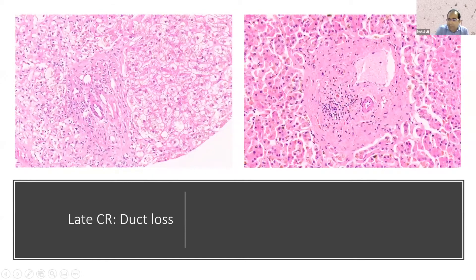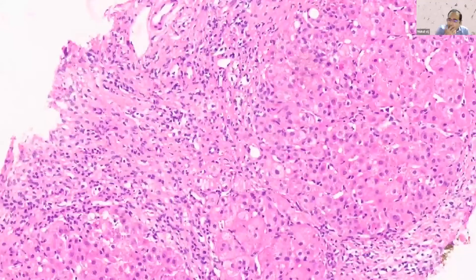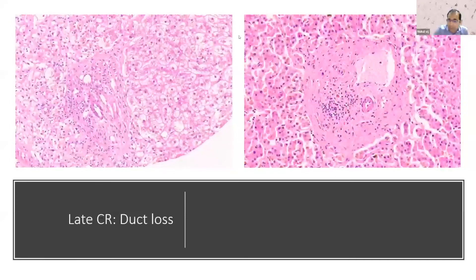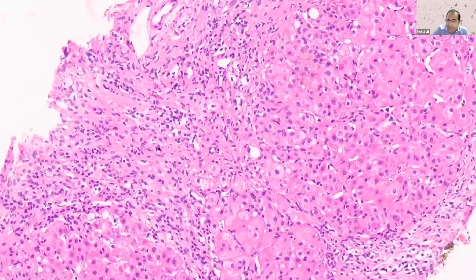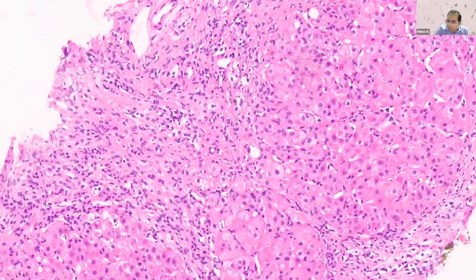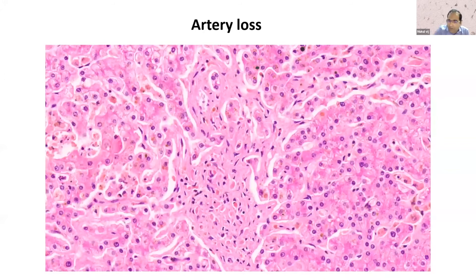This is the late stage in which you are seeing duct loss in the biopsy. Most of the time in late stages, you see that there is no ductular reaction, as compared to other biliary disorders. However, when you see chronic rejection associated with chronic hepatitis — as in a case of probable nine or ten years post-transplant — you can see some ductular reaction around it, though this is a less common feature. In most cases, you will not see any ductular reaction because of apoptosis as well as inhibition of progenitor cell activity. You can also see artery loss.